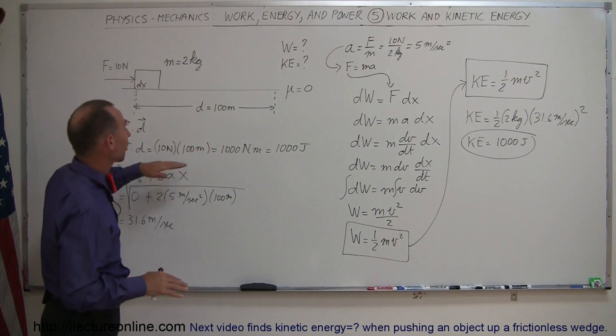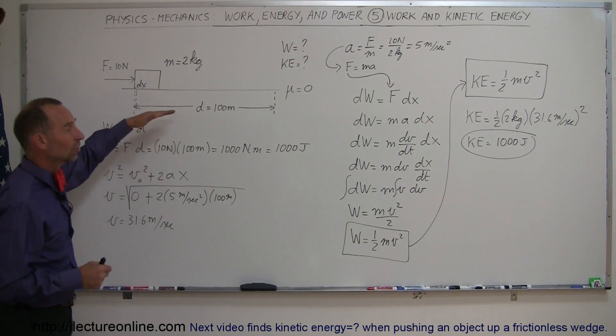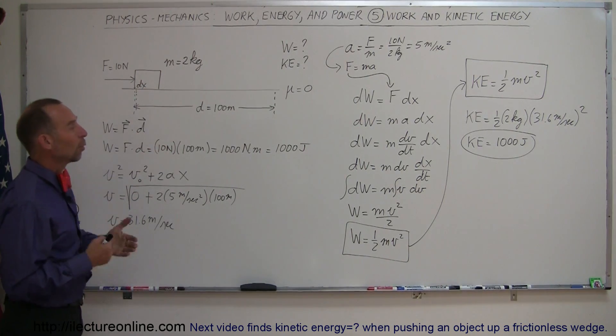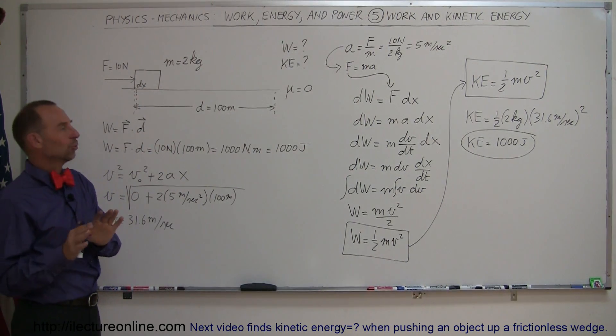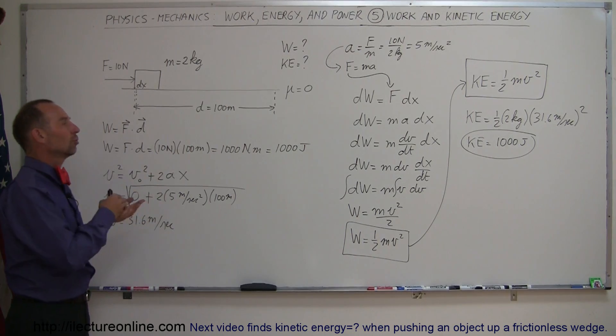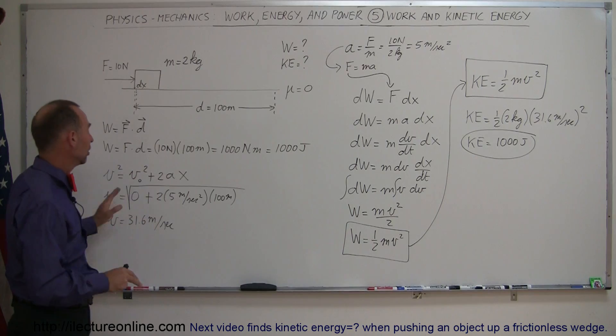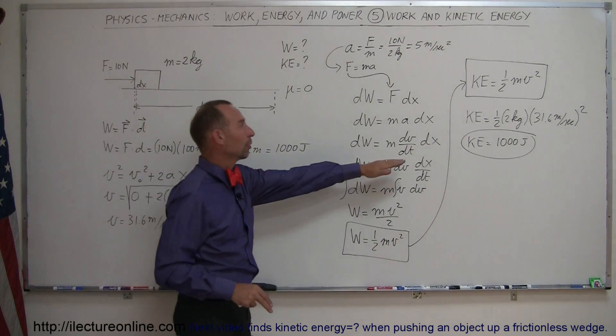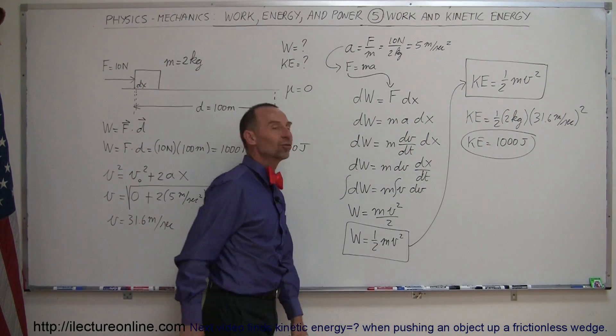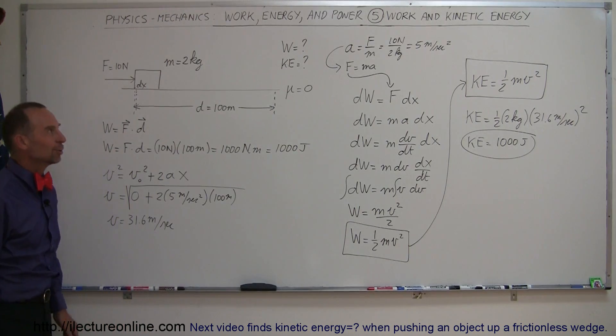assuming that none of the energy is lost due to friction, or any sort of resistance, wind resistance, and none of the work is used to gain potential energy. If all of it is used for kinetic energy, then all of the work is then converted to one half mv squared. That's how you do that.